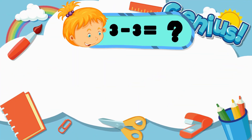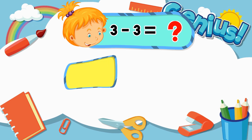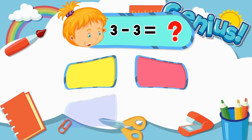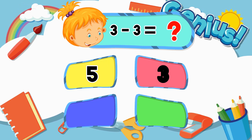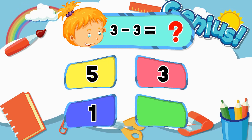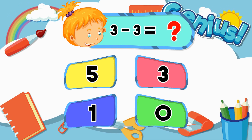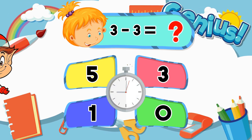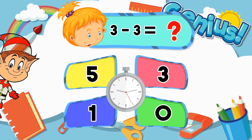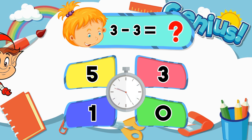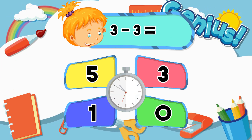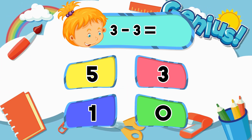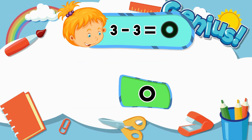What is 3 minus 3? Options: 5, 3, 1, 0. Answer: 0.